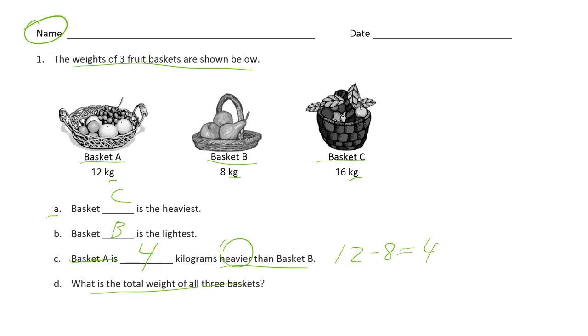What's the total weight of all three baskets? 12 plus 8 plus 16. And I hope you see this. The 2 here and the 8, these ones digits make a 10. So here's a 10 here, there's another 10, so that's 20. And then we add 20 to 16. 36. The total weight is 36 kilograms. Very important to write the units.